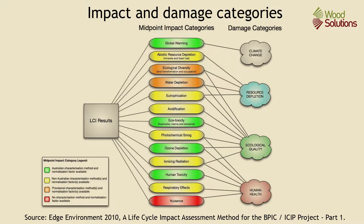Some of the impact categories include global warming potential, or GWP — a measure of greenhouse gas emissions such as carbon dioxide and methane. Ozone depletion potential is a measure of air emissions that contribute to the depletion of the stratospheric ozone layer. Eutrophication potential is a measure of nutrient enrichment that may cause an undesirable shift in species composition, such as algal blooms.